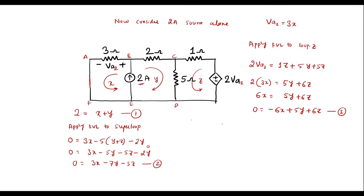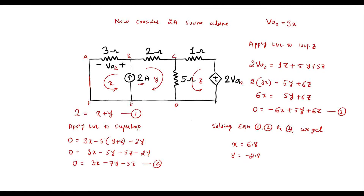Solving equations 1, 2, and 3 using a calculator, we get X equals 6.8, Y equals minus 4.8, and Z equals 10.8. Therefore VA2 equals 3X, that is 3 times 6.8, giving VA2 equals 20.4 volts. So VA2 is the voltage across the 3 ohm resistor considering the 2 amp source alone.